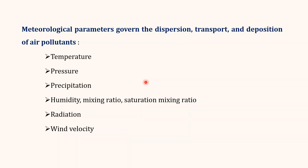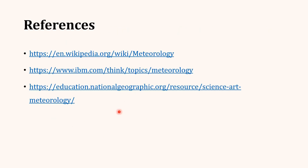For air pollution monitoring, understanding meteorological parameters is important because they govern the dispersion, transport and deposition of air pollutants. In the UGC NET syllabus, the parameters to cover are: temperature, pressure, precipitation, humidity mixing ratio, saturation mixing ratio, radiation and wind velocity. We will cover each topic in detail in upcoming videos. Thank you and best wishes.